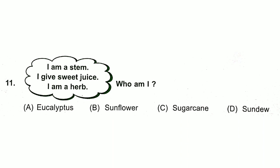Question 11: I give sweet juice. I am a herb. Who am I? Answer is option C. Sugarcane.